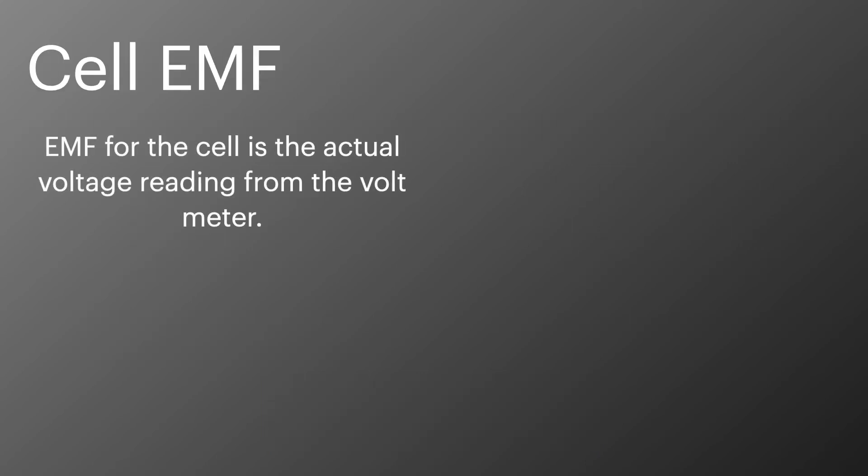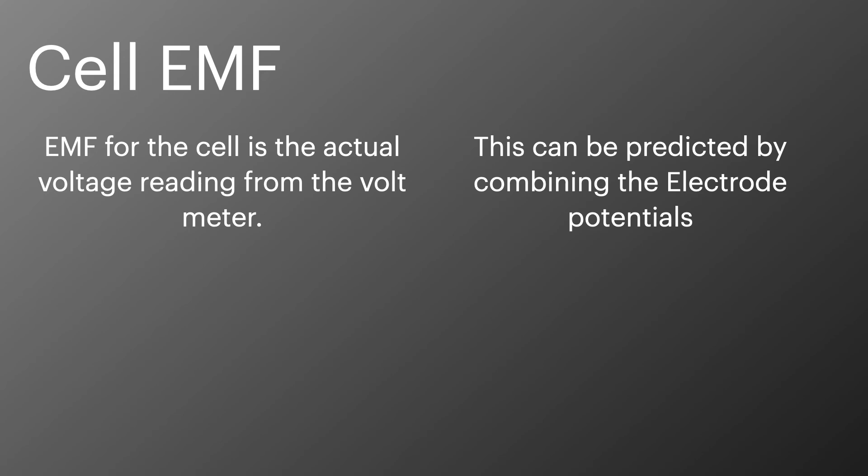The cell EMF is the actual voltage that we'd read off the voltmeter when we combine the two half cells. This can be predicted by combining the electrode potentials from the electrochemical series. We use this equation. E cell equals the E of the right-hand side minus the E of the left-hand side. We use a little plimsoll sign here to show that these values are according to standard conditions, which we talked about when we talked about the standard hydrogen electrode.